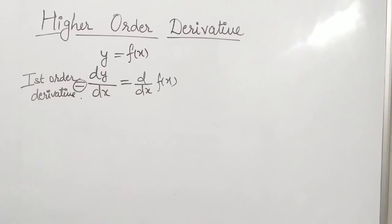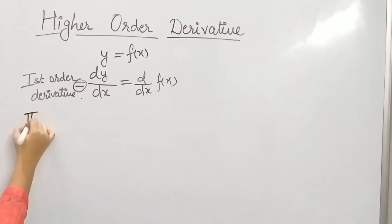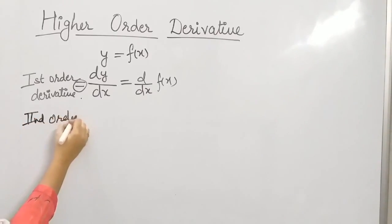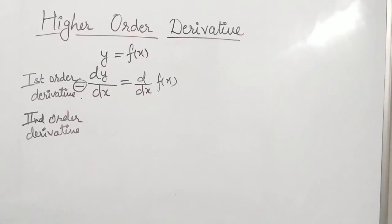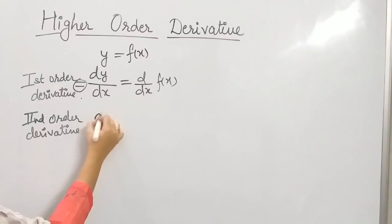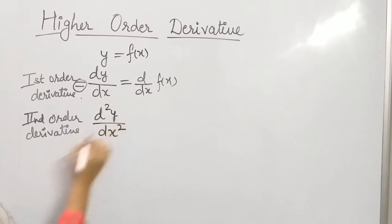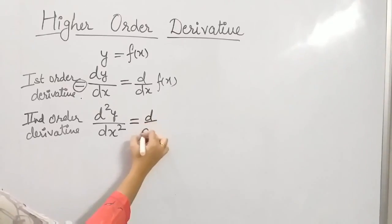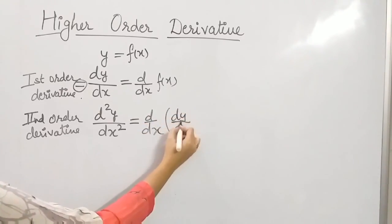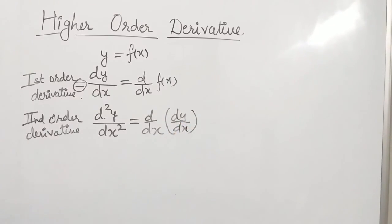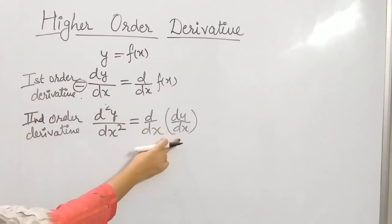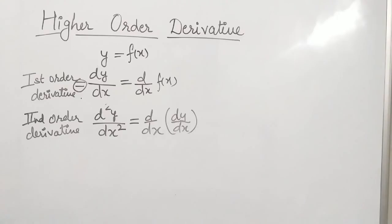Now, to find higher order derivatives — second order, third order, and so on — we differentiate further. To find the second order derivative, we differentiate the first order derivative with respect to x, giving us d²y upon dx². That means dy/dx is differentiated again with respect to x to get the second order derivative.